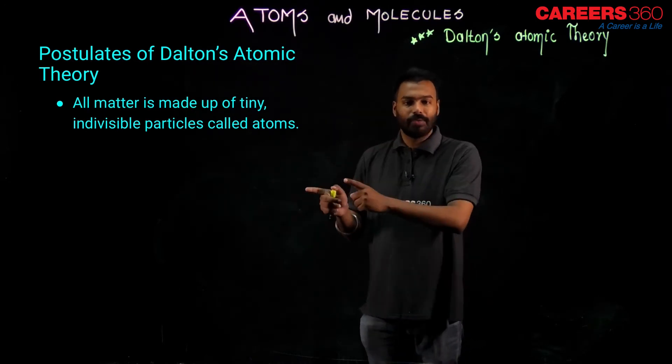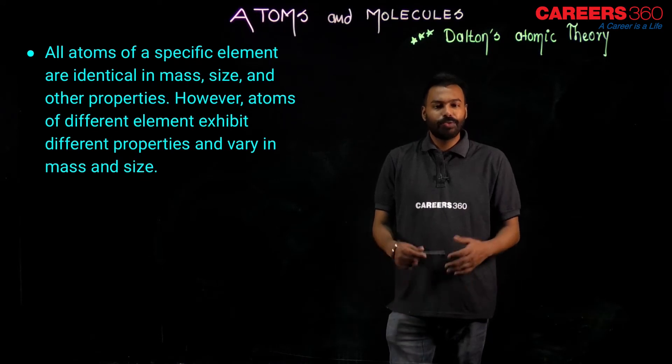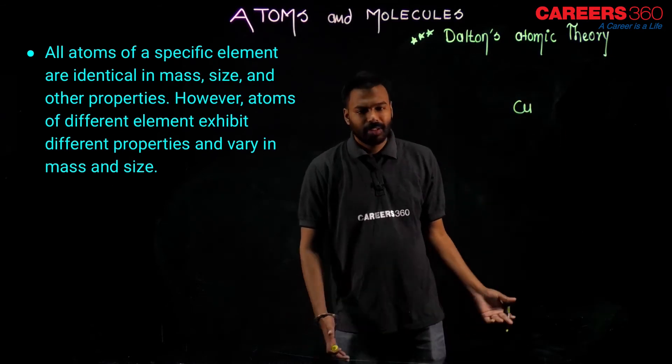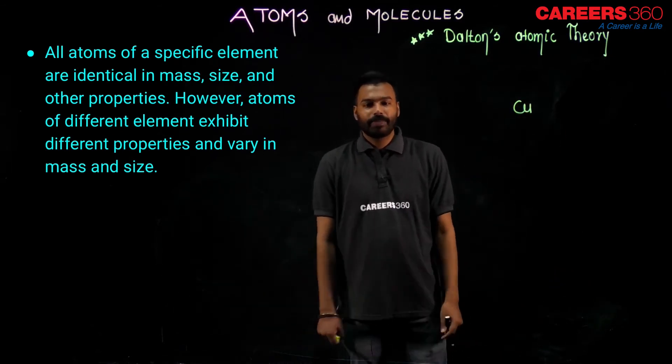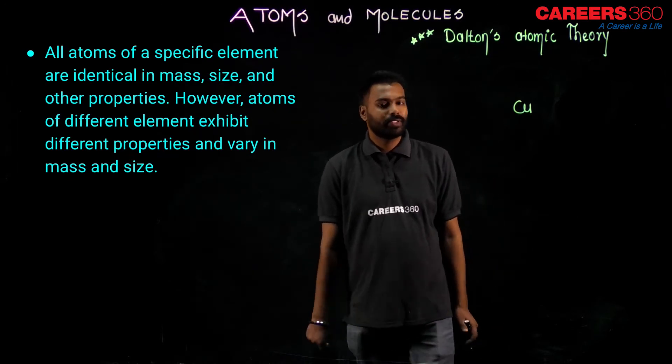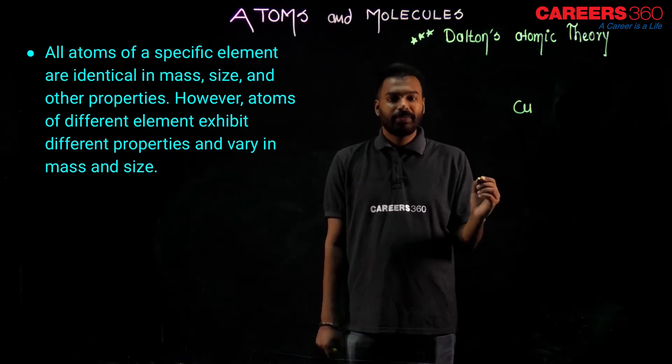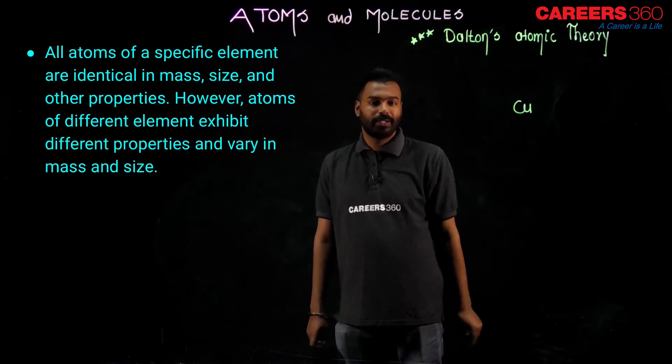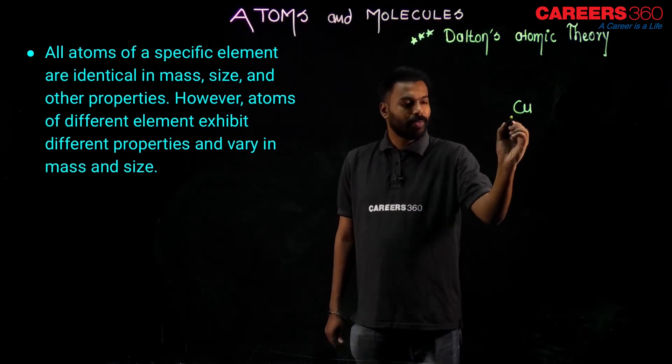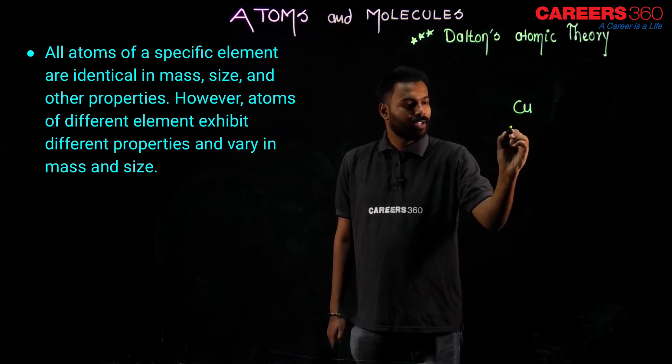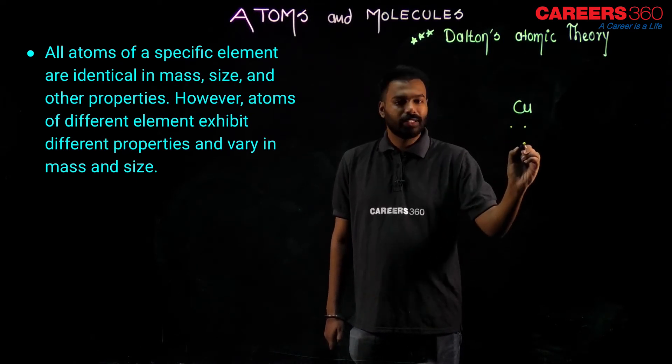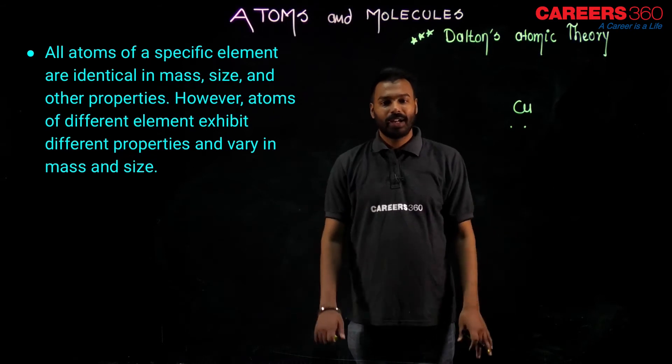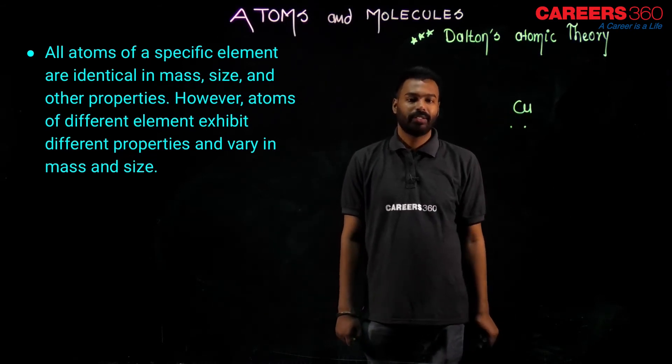Let me introduce you point number two now. Atoms of specific element - you choose any element. Suppose I am taking copper. You can take sodium, no problem. All atoms of specific element are identical in mass. If you talk about the copper element, it is made up of so many atoms, uncountable atoms. Let us talk about only two atoms. If this copper has one atom like this, then other atom is also like this. The fourth atom is also like this. The 4000th atom is also like this. All atoms are identical of any one particular element, Dalton is saying.